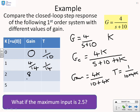If K equals 2, the gain is 8 over 18, and the time constant is 1 over 18. If K equals 5, the gain is 20 over 30, and the time constant is 1 over 30.